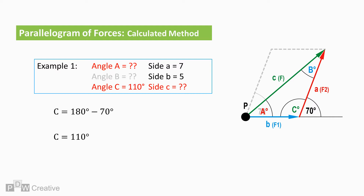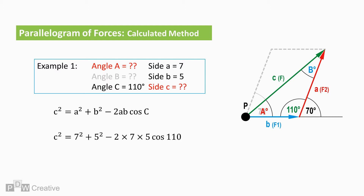Angle B can be ignored as we have all the information we need to calculate the resultant force magnitude and angle of action. From the cosine rule for calculating sides: C squared equals A squared plus B squared minus 2 times A times B, cosine angle C. The square root of which gives a force magnitude of 9.89 Newtons.